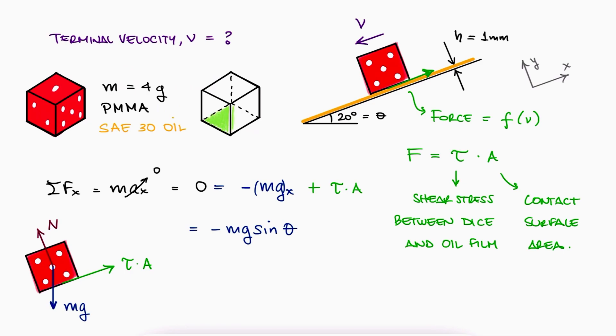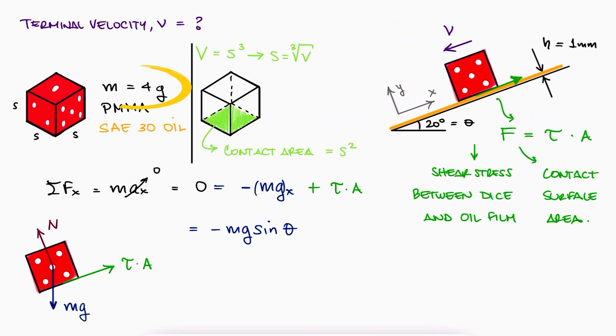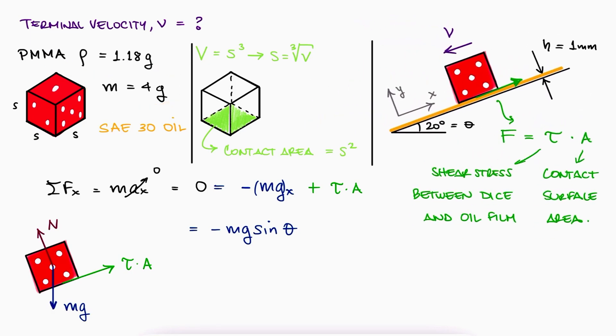The contact area can be found if we know the length of the side of the dice. The side length can be found if we have the volume, as the volume is just s cubed. And since we have the mass and we can look up the density of PMMA, by knowing that density is mass over volume, the volume would be mass over density. The side length would be the cubic root of mass over density and the surface area, that value, squared.